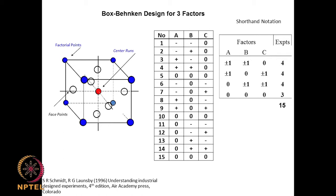The Box-Behnken design for 3 factors operates at 3 levels: minus, 0, and plus. There are 15 experiments total. Essentially, experiments are done at 4 corners of each face plus central runs. We do 3 central runs and experiments at the 6 faces of the cube — so 8 corners, 6 face points, and the center point.